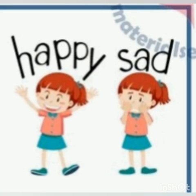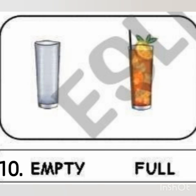The opposite of happy is sad and the opposite of sad is happy. Number ten is empty and the opposite of empty is full. In the picture you can see two glasses — the first one has nothing in it, so we say it is empty. The other one is full with shikanji. So the opposite of empty is full and the opposite of full is empty.